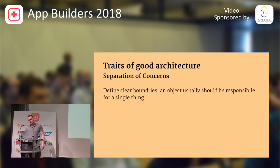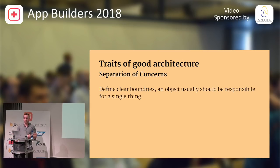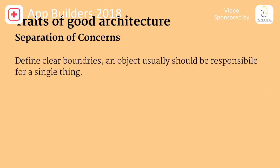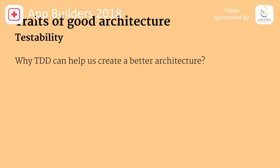With separation of concerns, you want very clear boundaries for what an object does. If you look at an entity in your project, you should be able to tell what it's responsible for. Most of the time a single object should be doing just one thing — though some objects serve as coordinators between entities, which is still a single role of managing things.